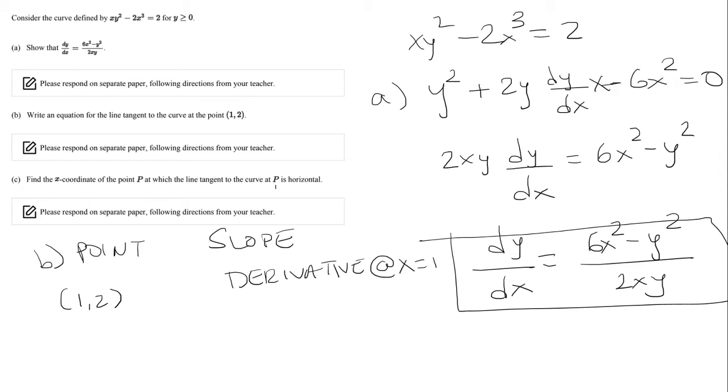So in this case, x = 1. In part a, we solved for the derivative. So let's plug it in. x is 1 and also y = 2 because the derivative depends on both x and y.